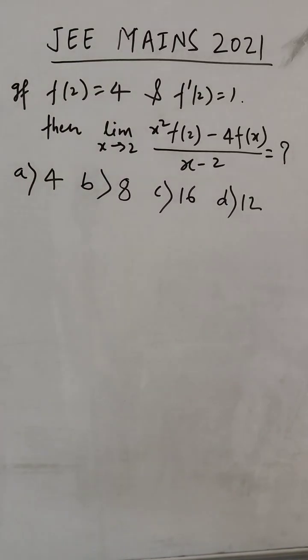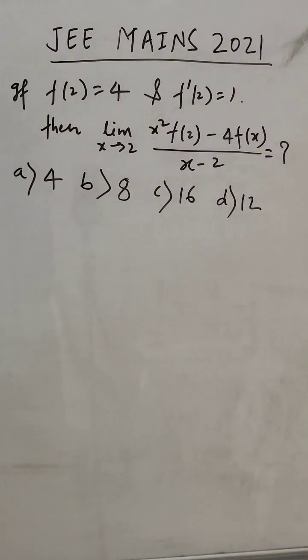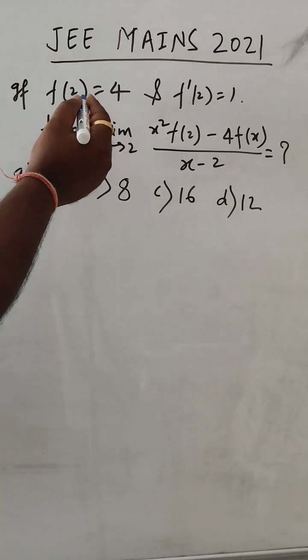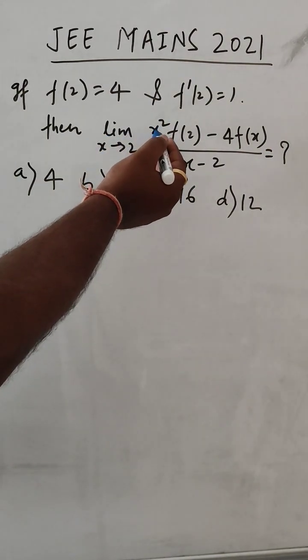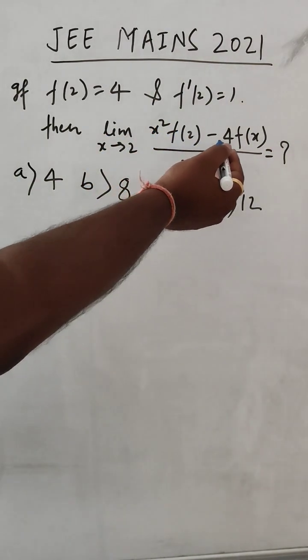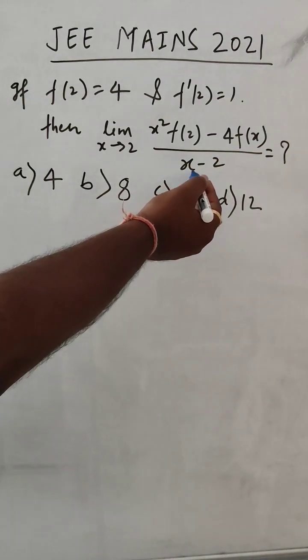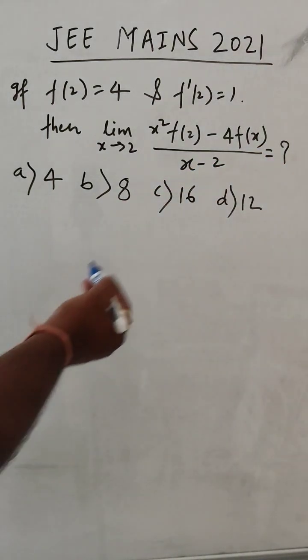Hello everyone, let's solve this problem that came in JEE Mains 2021. We have f(2) = 4 and f'(2) = 1, and limit as x tends to 2 of [x² f(2) - 4f(x)] divided by (x - 2). What is the value we have to find out?